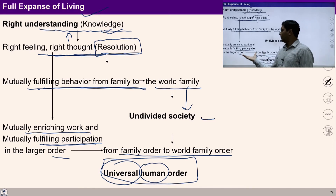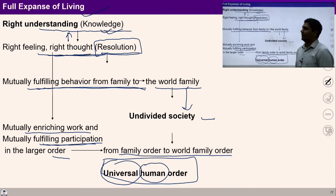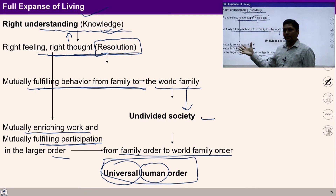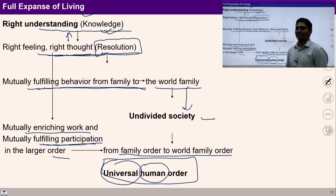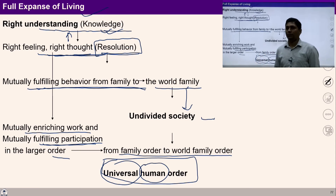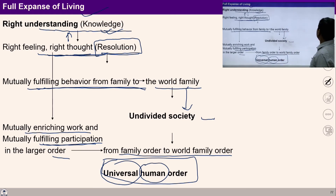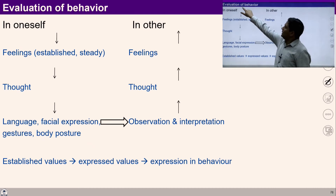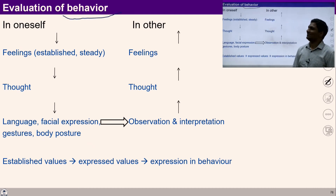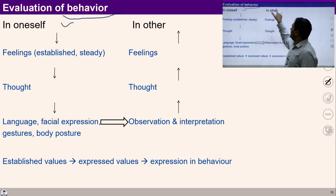Have you ever thought that you have enough potential to participate from family to world family order? Understand your expansion of living and evaluate right now: what is your living now, and what is possible with your potential? Now, with this full expansion of living, can we see how to evaluate our behavior in oneself and in the other?